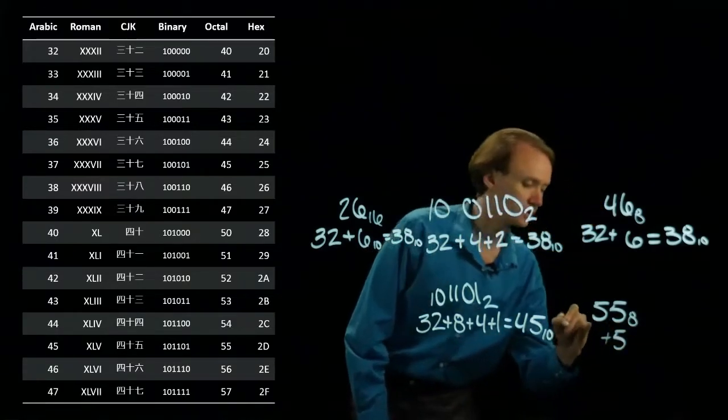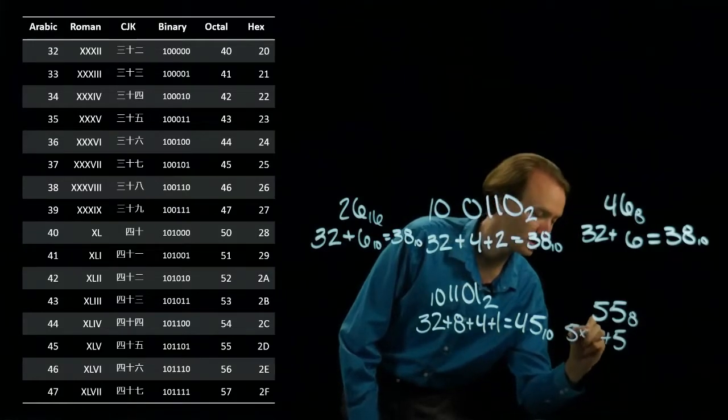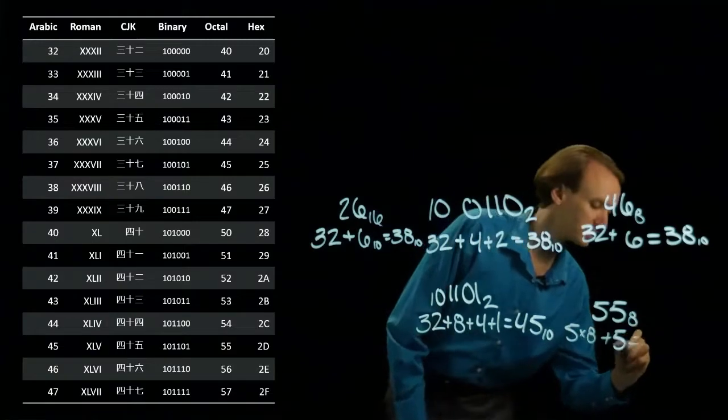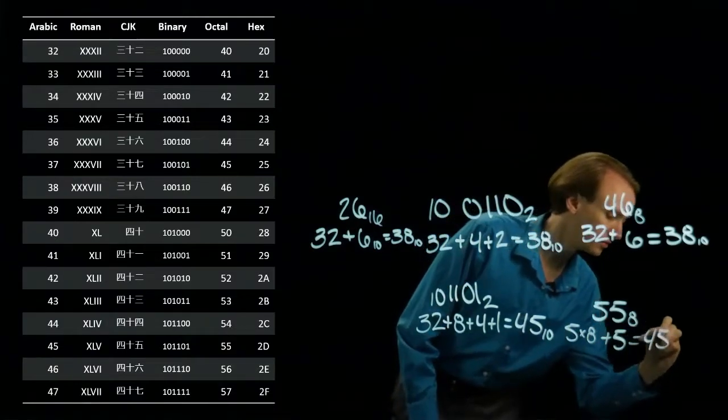And the 5 becomes 5 times 8. So, 40 plus 5 equals 45 in decimal.